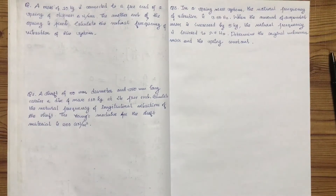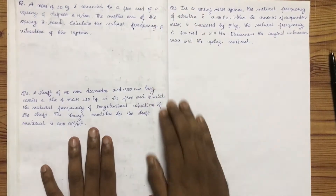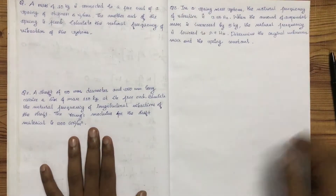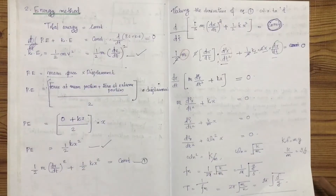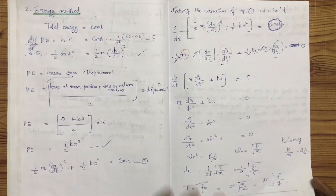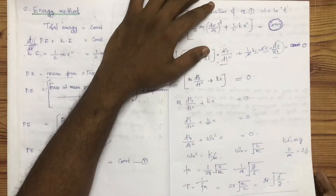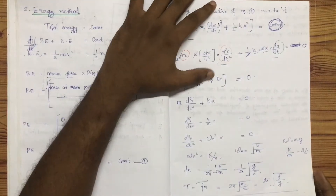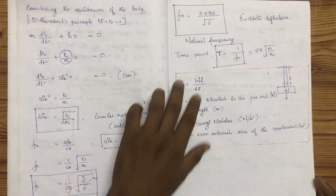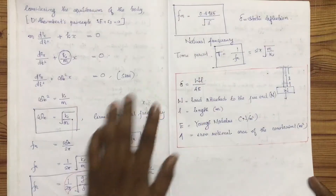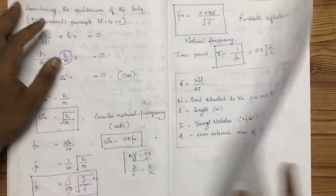Now we have the energy method and the equilibrium method. We have the natural frequency, the time period, or the circular frequency. The equations are important. Now we have a few problems.